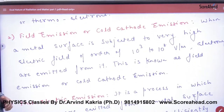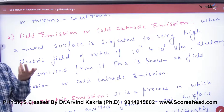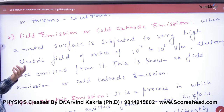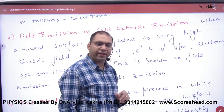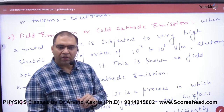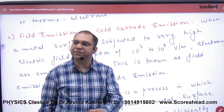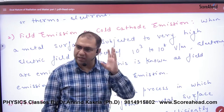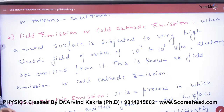The other way electrons come out is field emission, also called cold cathode emission. It is very simple — you apply a high electric field, of the order of 10³ to 10⁸ V/m. The electrons gain energy from this electric field and leave the metal surface. This is field emission.